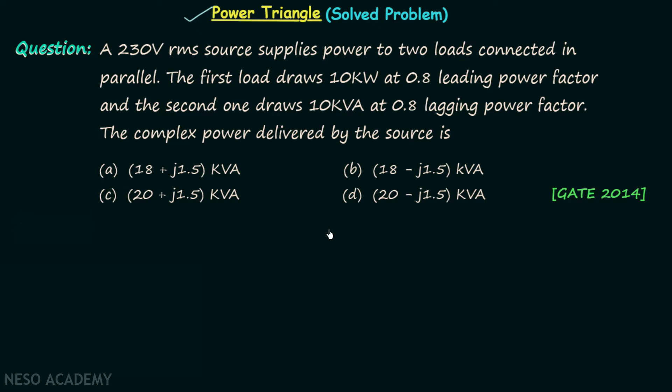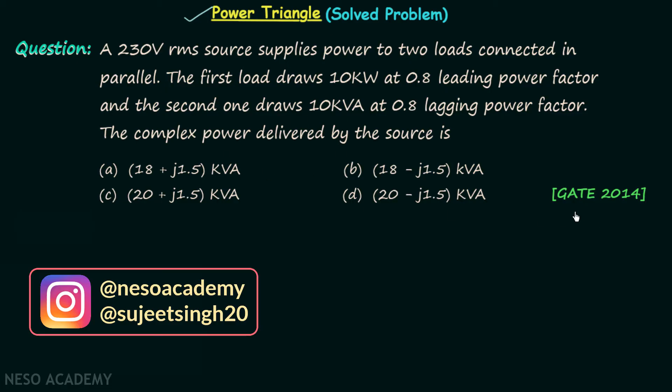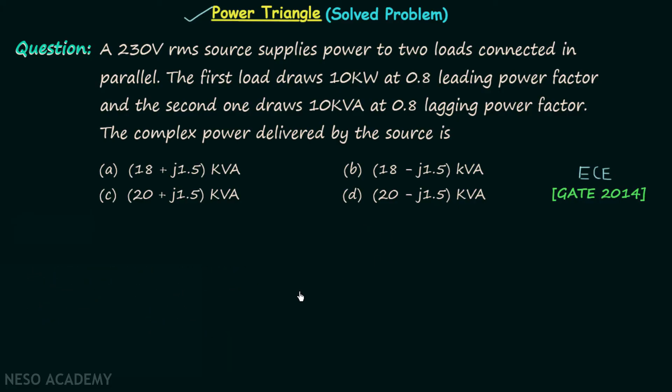The complex power delivered by the source is—there are four options given in the question. This question is taken from GATE 2014 ECE paper. I want you to pause this video and try to solve this question on your own. I hope you are done. Now let us understand how we can solve this question. According to the question we have one voltage source with RMS voltage equal to 230V.